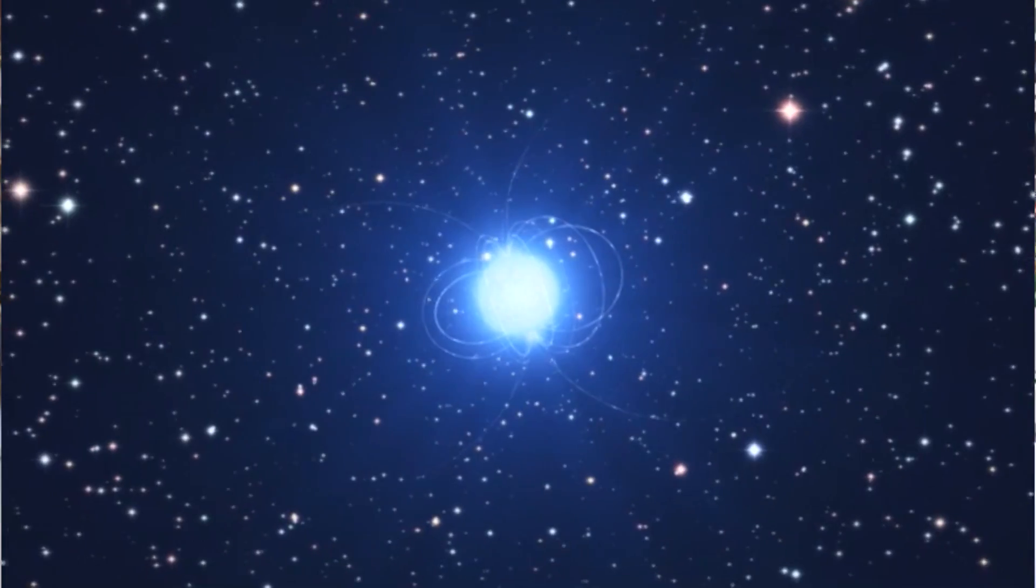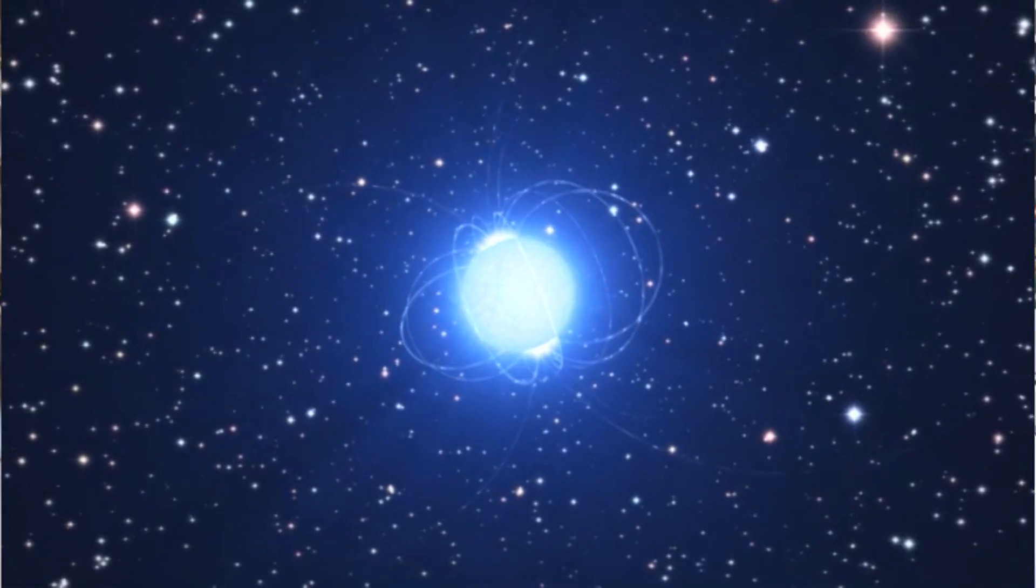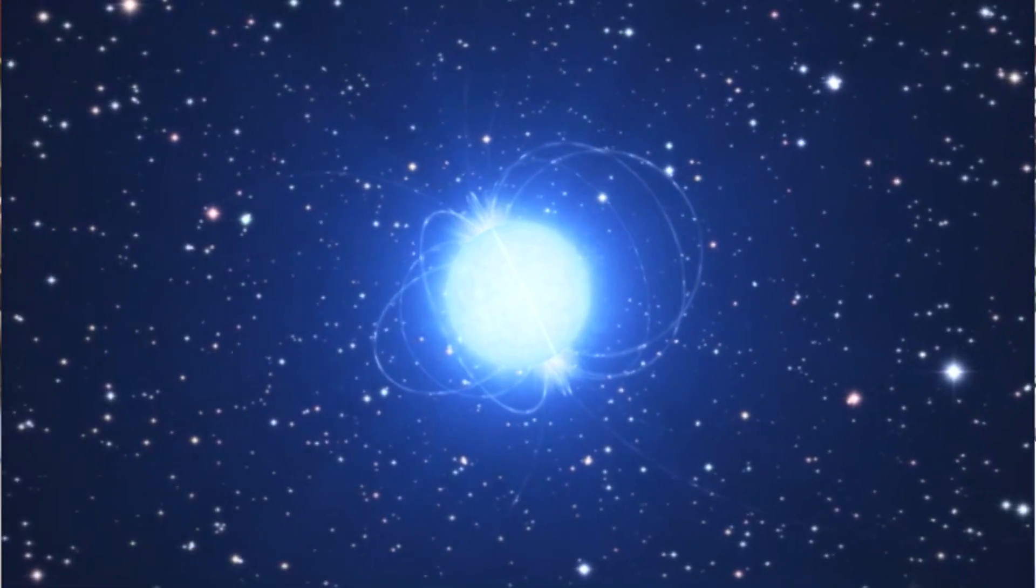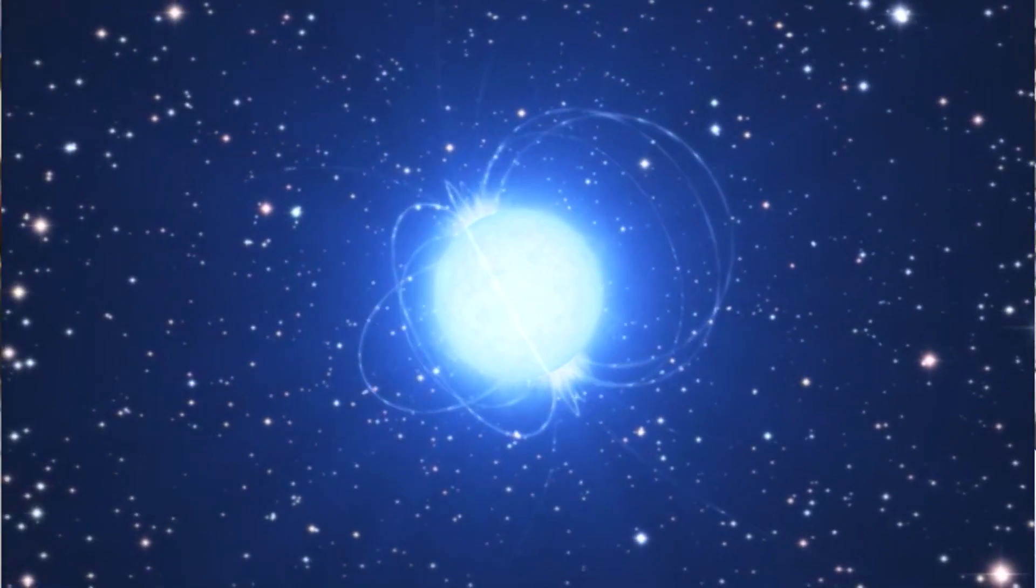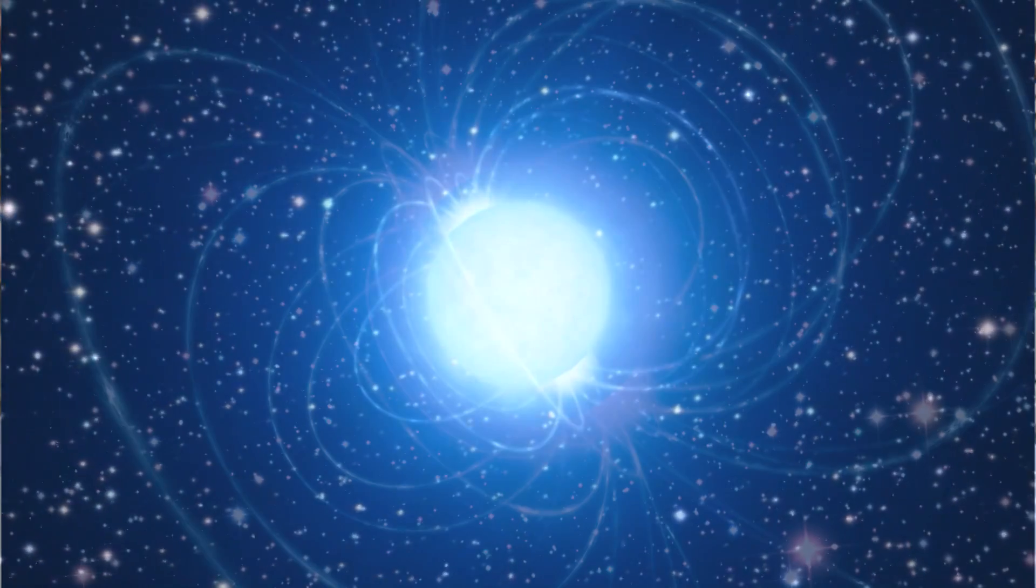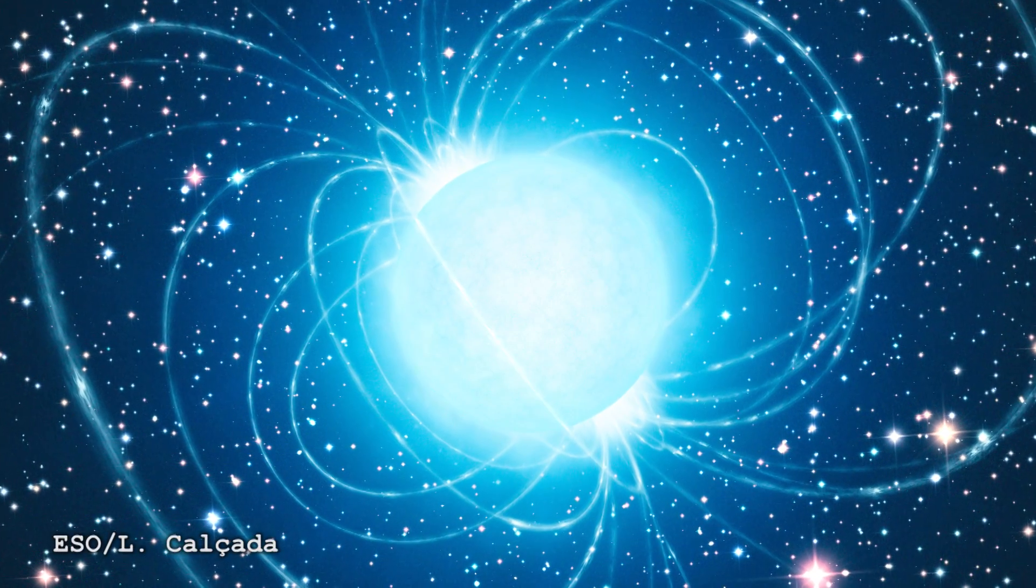There's only three magnetars in star clusters in the Milky Way. One's in Westerland 1. And there are two other star clusters, which are pretty young. Two of the three ones in clusters, where you can get an age and therefore a mass of the star, are in pretty young clusters.